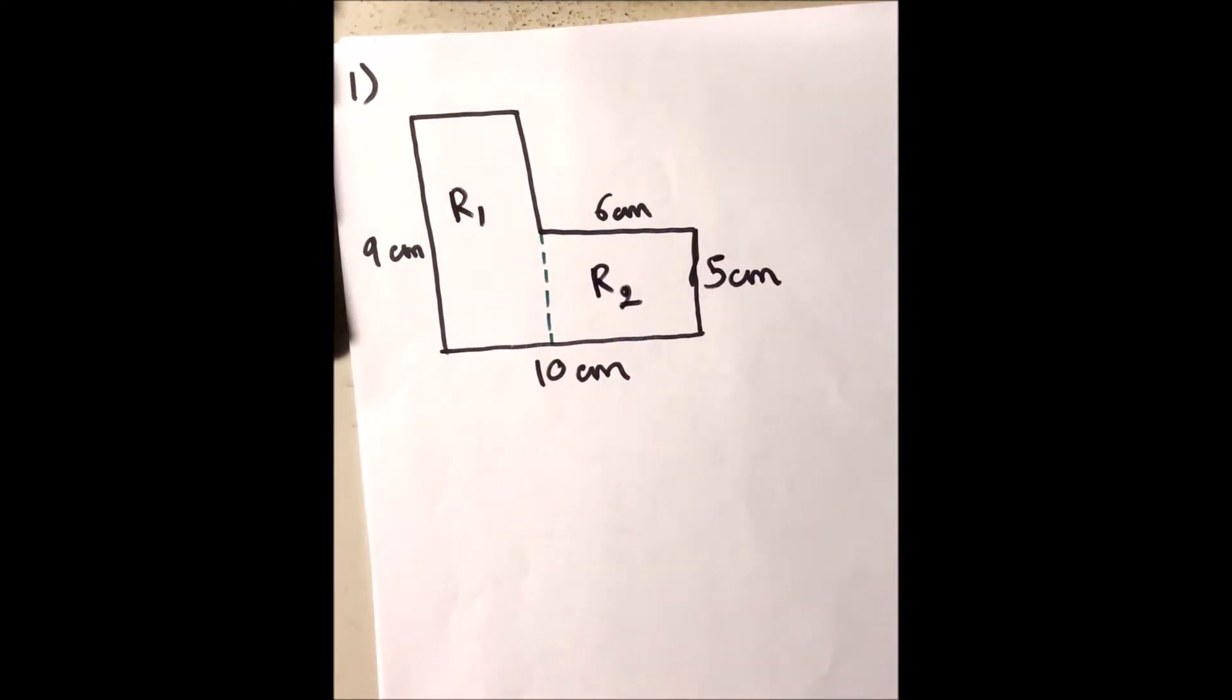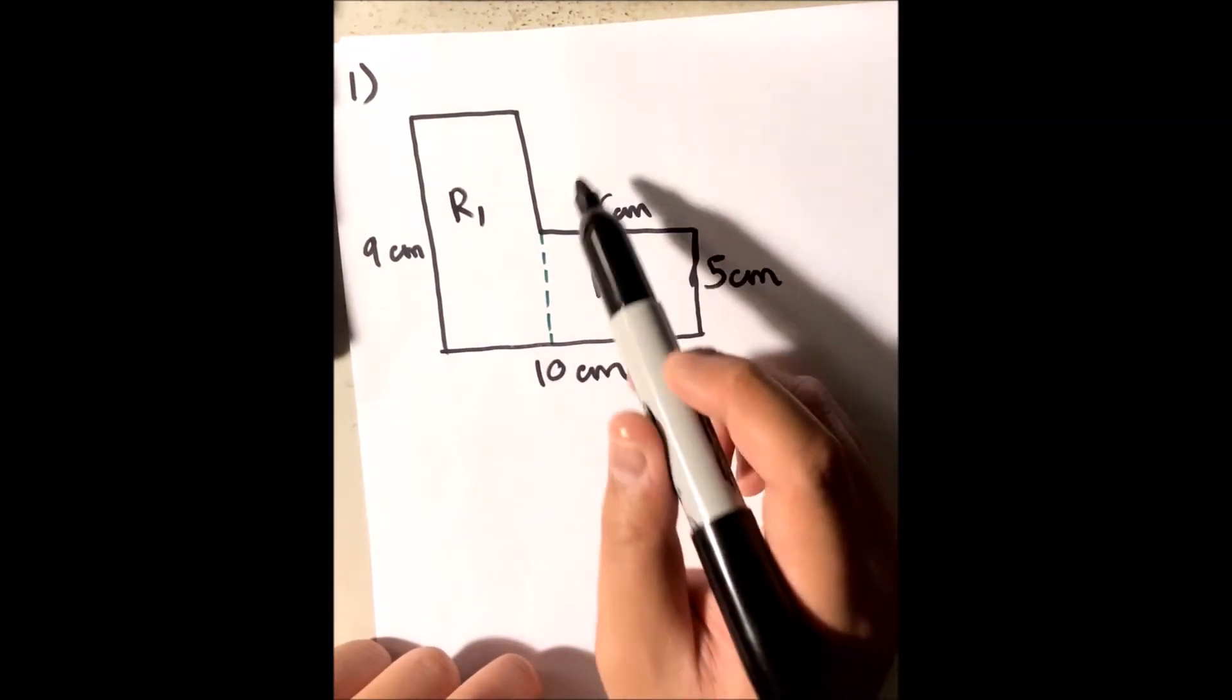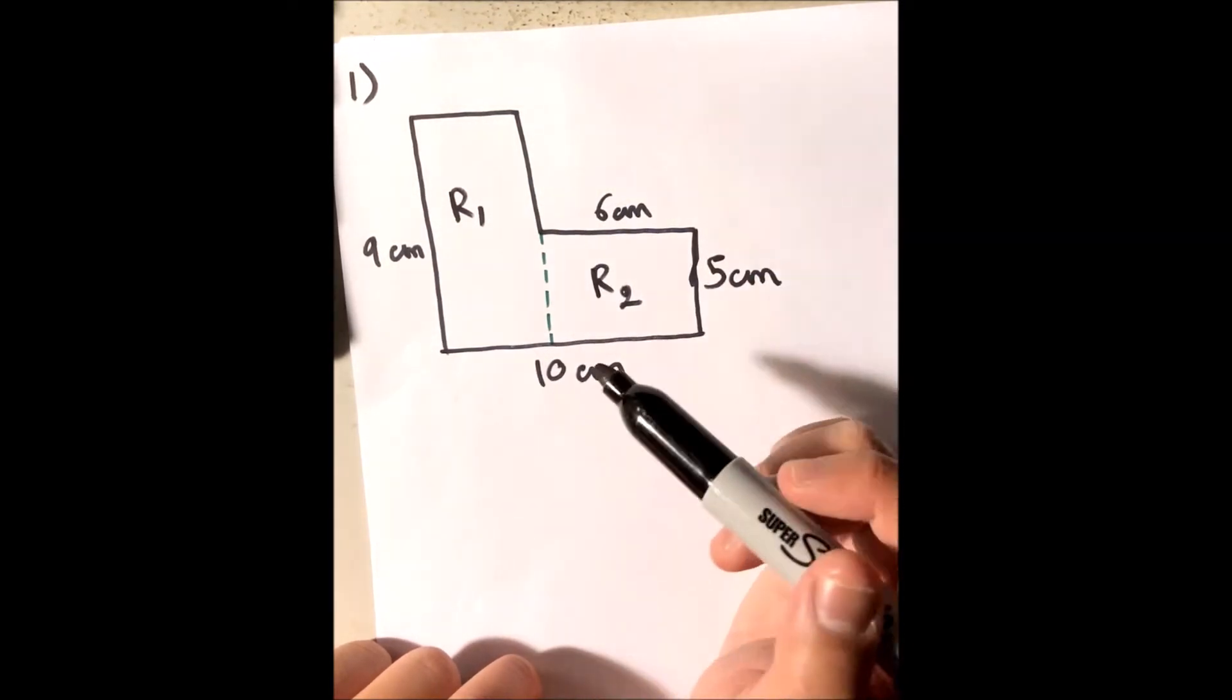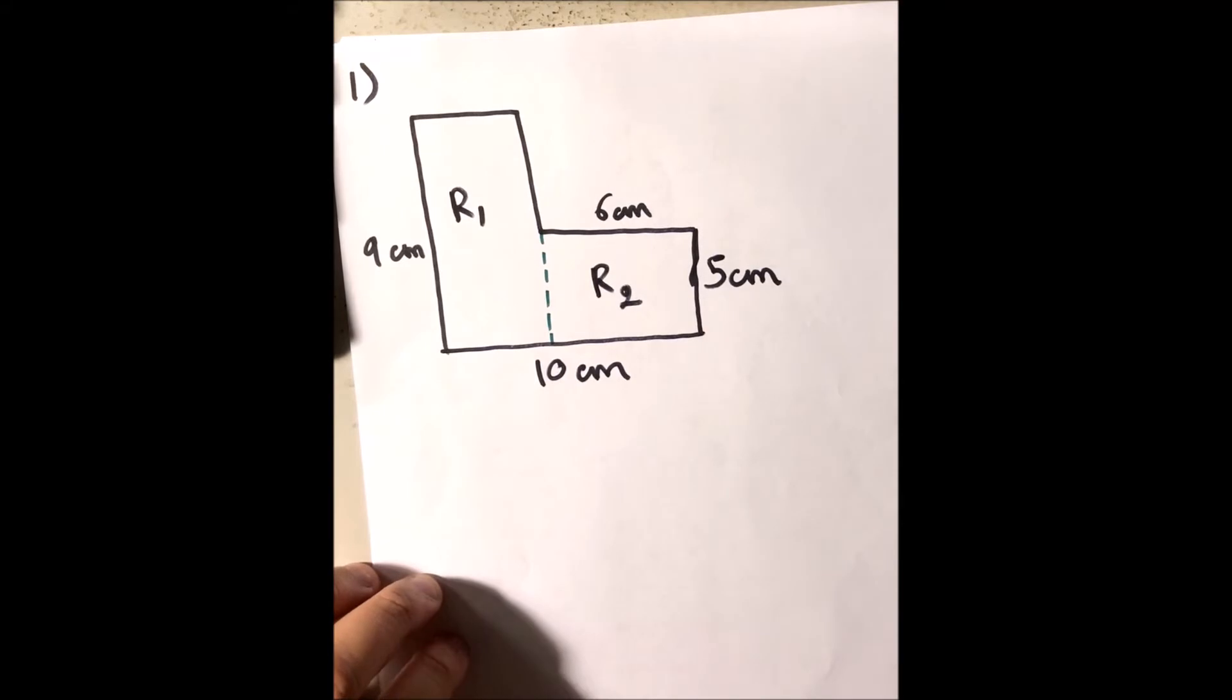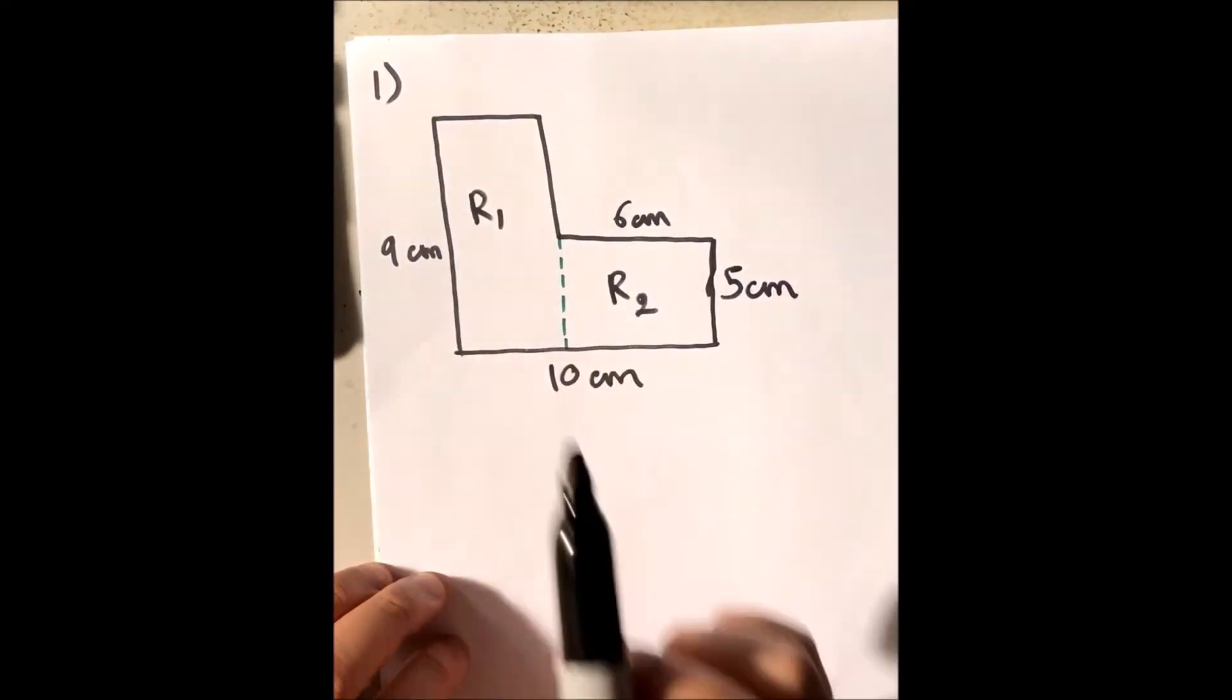So easily, if we want to find the perimeter of this irregular shape, we just have to add all the sides together. But what are all of those sides? Well we're missing one side. In this case I'm missing this side.